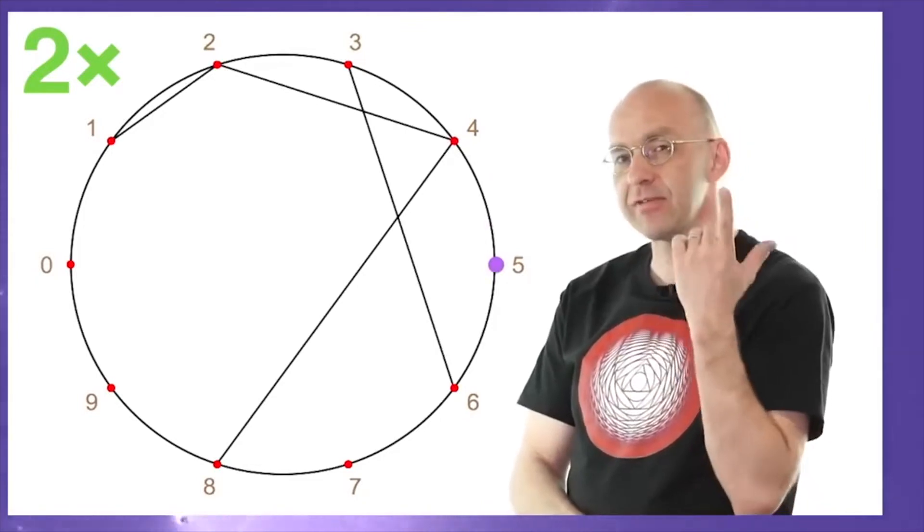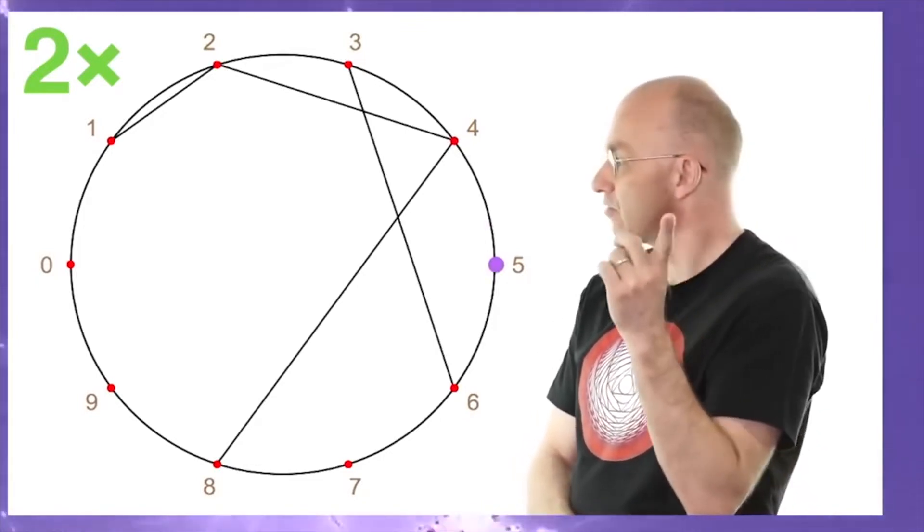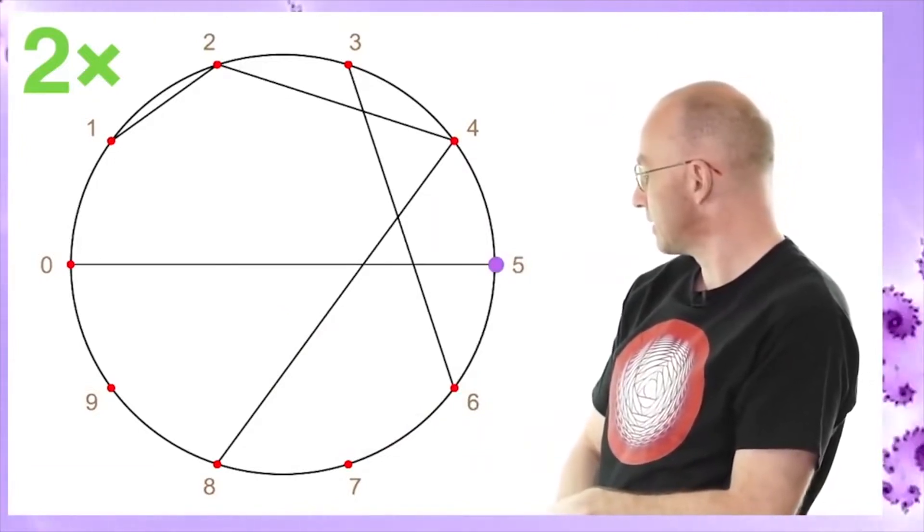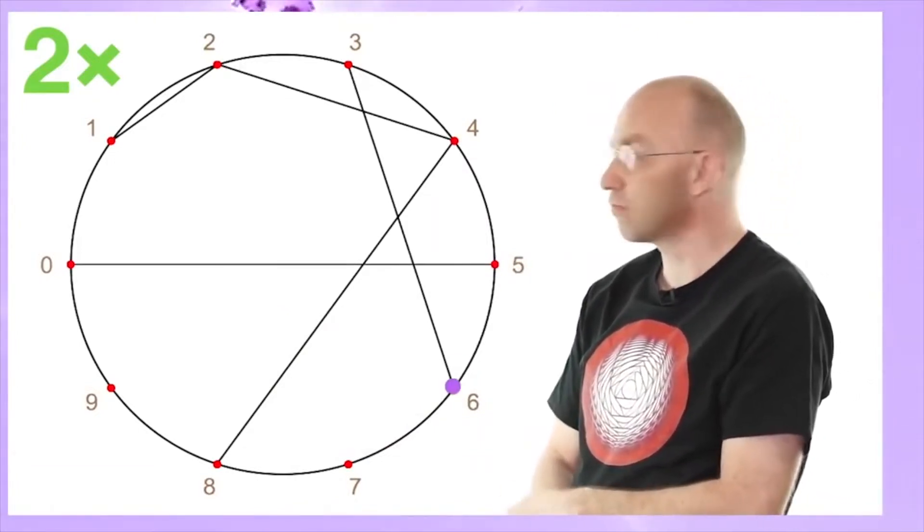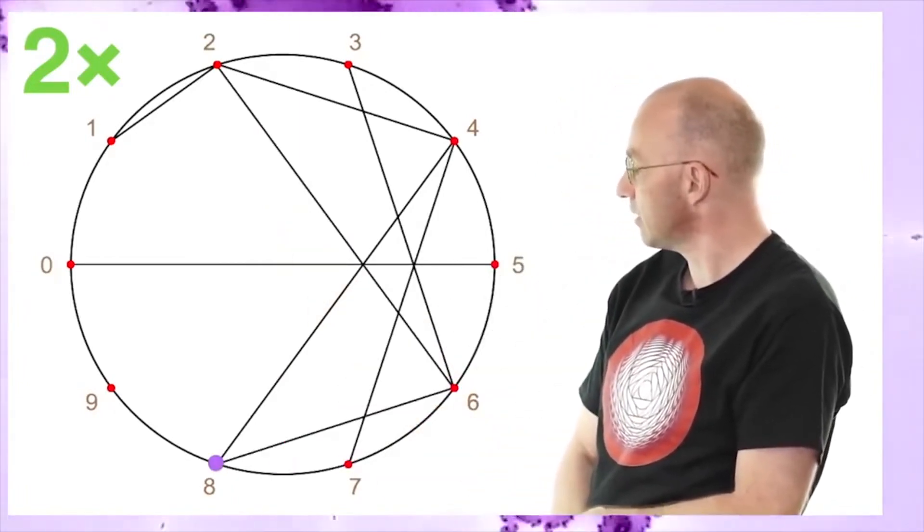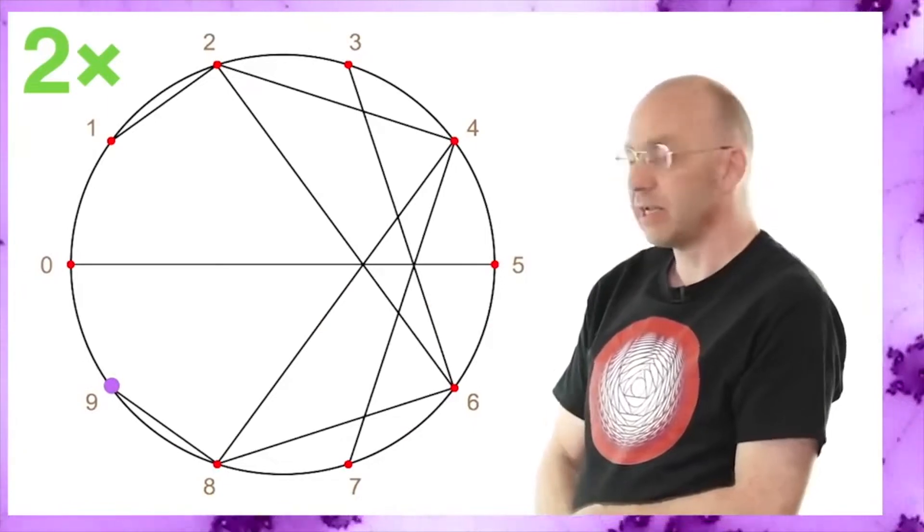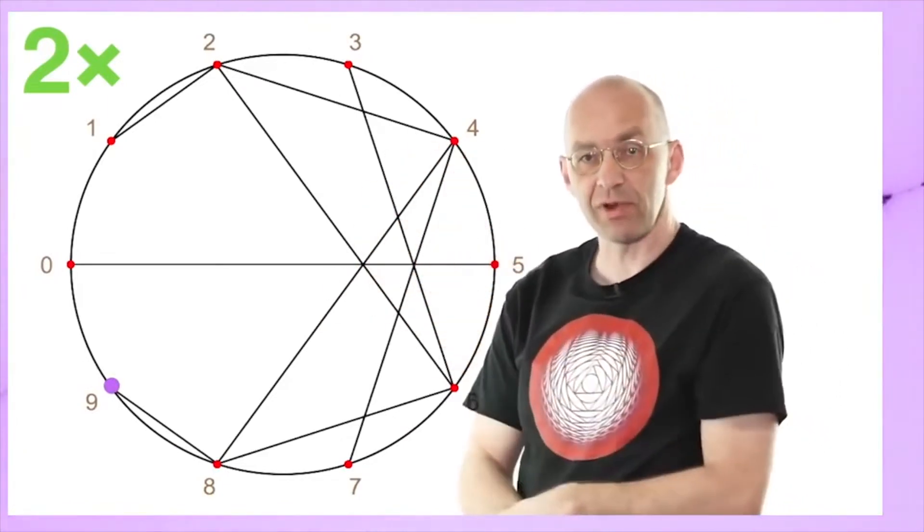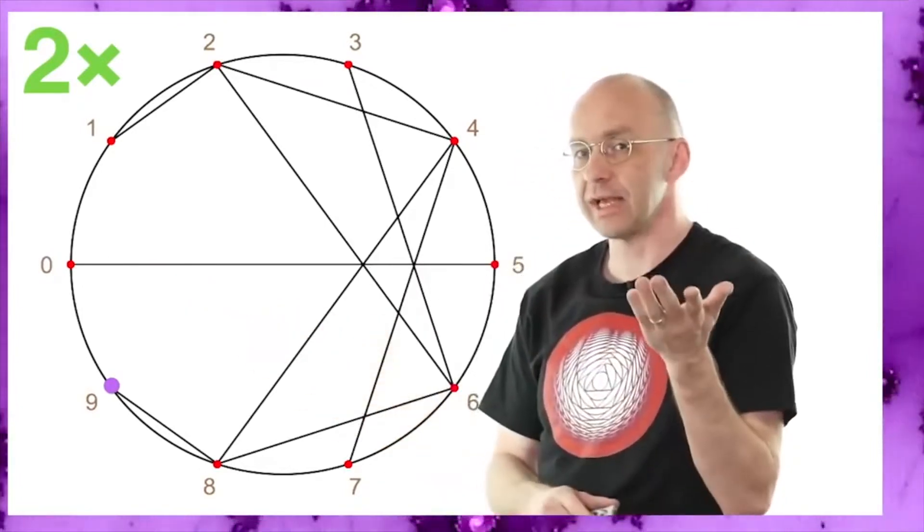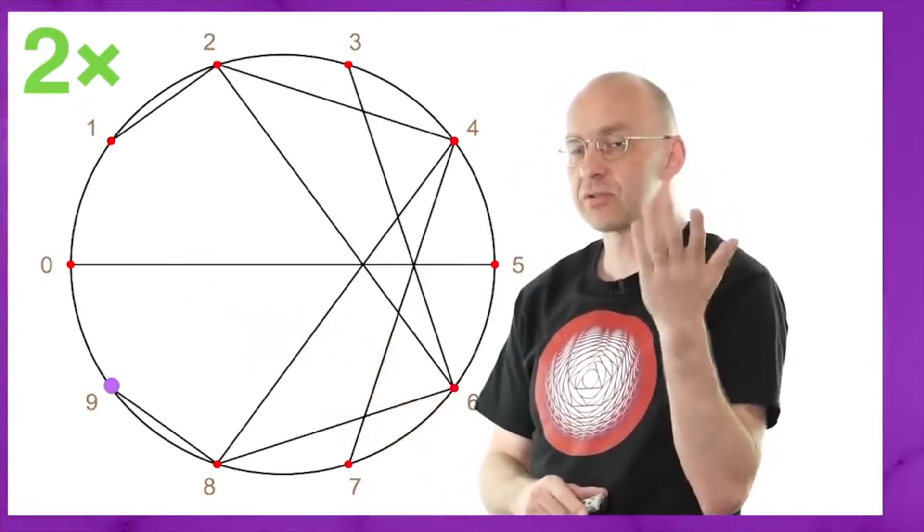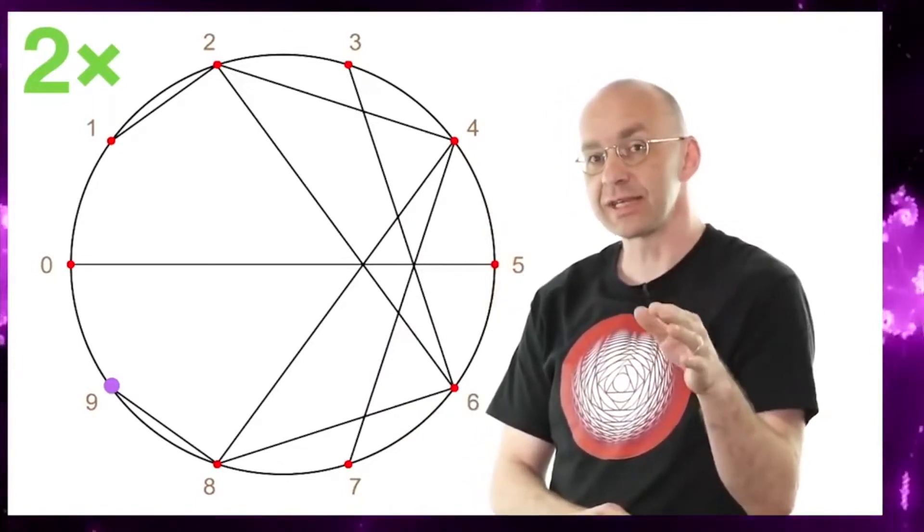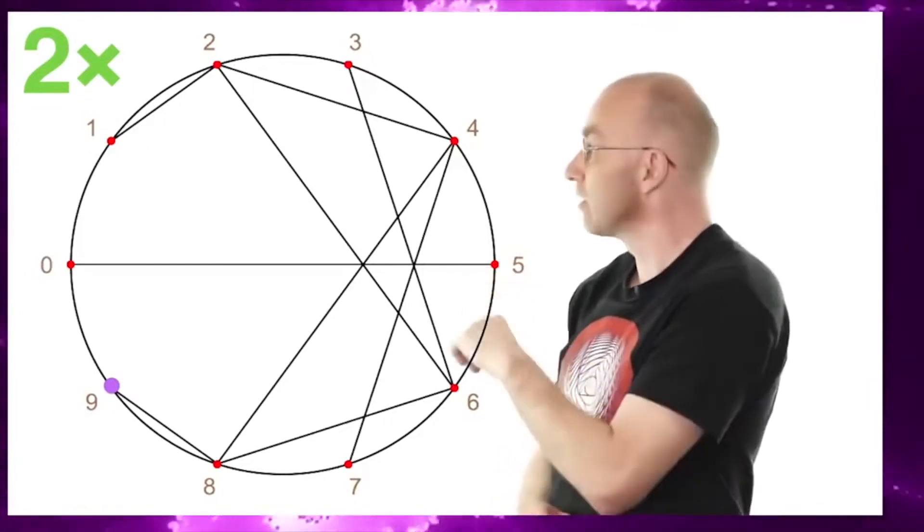Now 5. 2 times 5 is 10. Remember, 10 is also over there. So we connect that guy up. And then 2 times 6 is 12, which is also the 2. So we connect that one and then kind of just keep on going like this. And then you're at 9 and you've pretty much gone all the way around. Now you could go on.